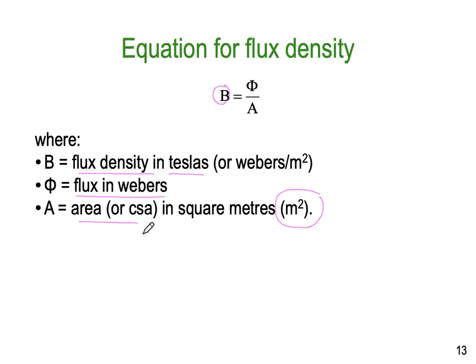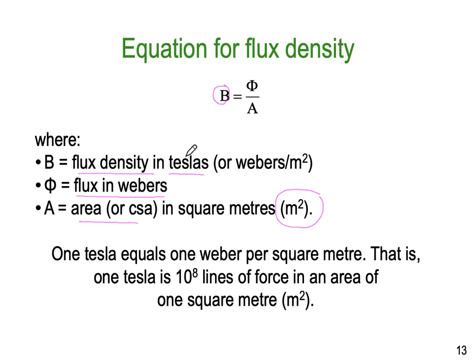One Tesla equals one Weber per square metre — so one full Weber over one square metre equals one Tesla. At one Tesla, that is times ten to the eight lines of force in an area of one square metre. It's a simple relationship: a fixed number of lines of force spread over the area tells us the flux density in Teslas.